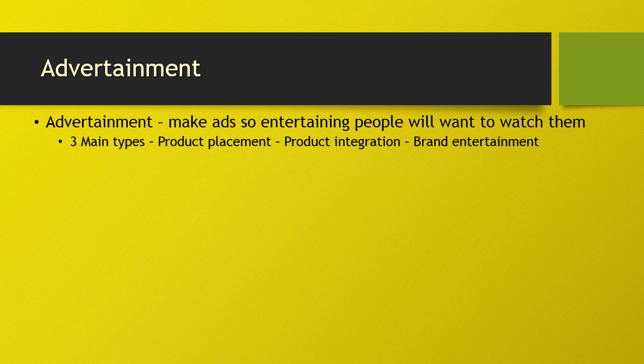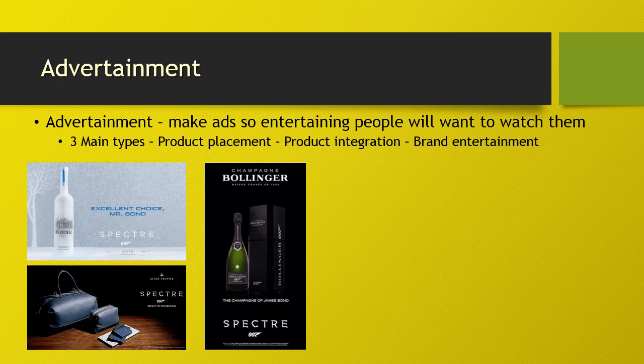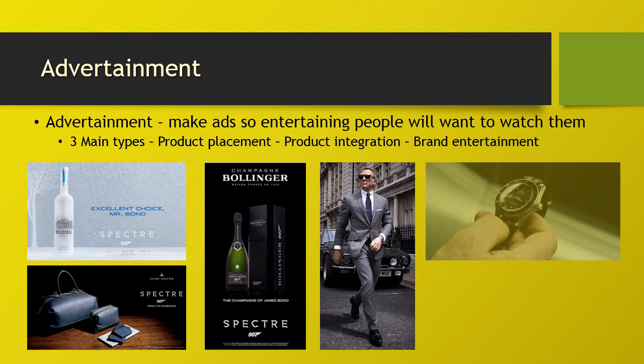James Bond films are very well known for heavy product placement. In the Bond film Spectre, you'll be able to see or hear brands including Belvoir Vodka, Globetrotter Luggage, Heineken Beer, McAllen Whiskey, Omega Watches, Tom Ford Suits, and then there are the cars: the famous Aston Martin Bond car, Fiat, Jaguar, Land Rovers, Range Rovers, and Mercedes-Benz, among many others in that particular film.